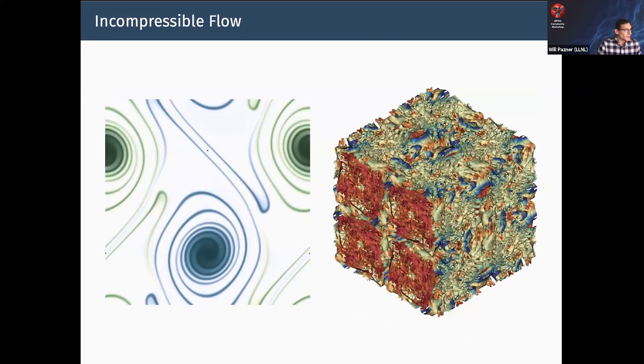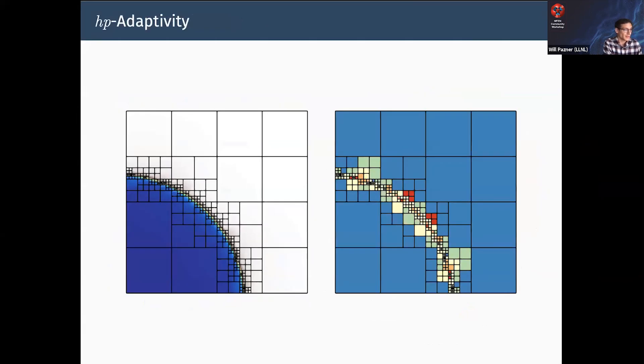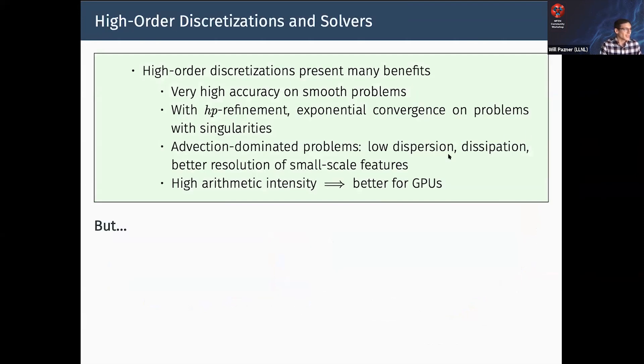These are some images from our incompressible flow mini-app. The advantages of high-order have been demonstrated quite extensively in the literature for incompressible Navier-Stokes equations. This is an example of HP adaptivity on a problem with a steep gradient. These are examples illustrating reasons why we're interested in pursuing high-order discretizations.